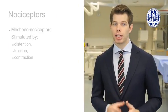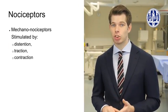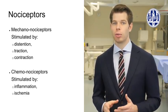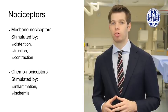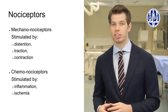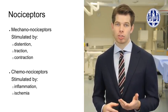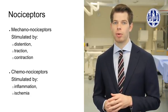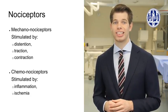The nociceptors that line the abdominal organs can be classified as mechano-nociceptors and chemo-nociceptors. Mechano-nociceptors respond to distension or traction on visceral tissues. Chemo-nociceptors are stimulated by local chemical agents released during inflammation and ischemia. Unlike the skin, visceral nociceptors are not triggered by cutting, burning or crushing stimuli.